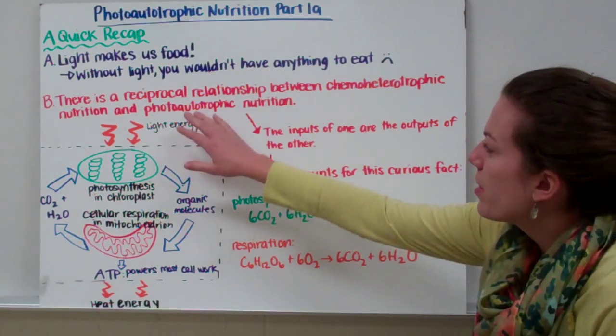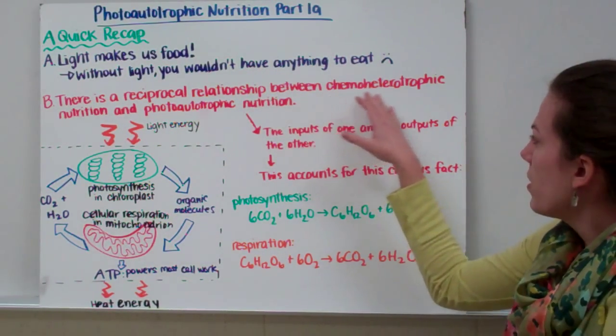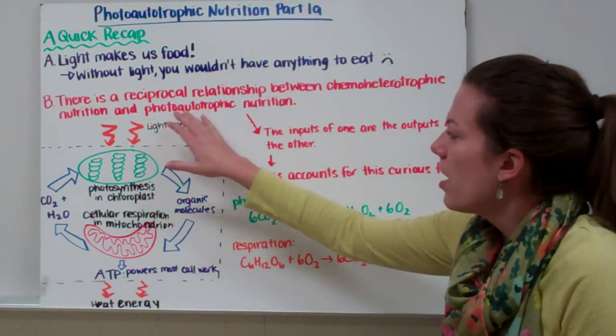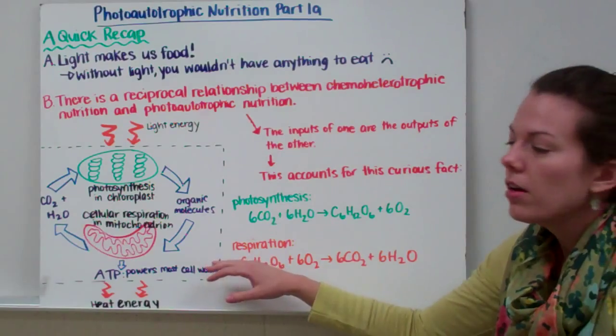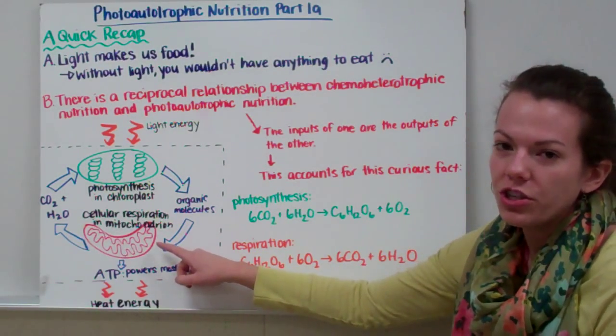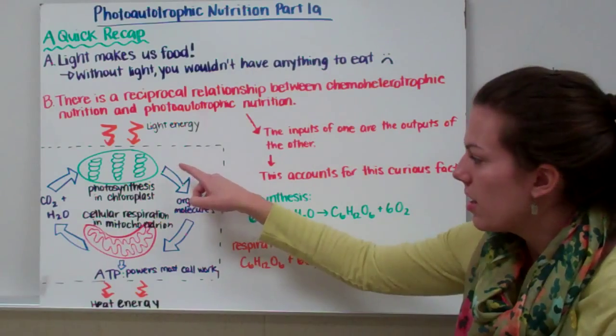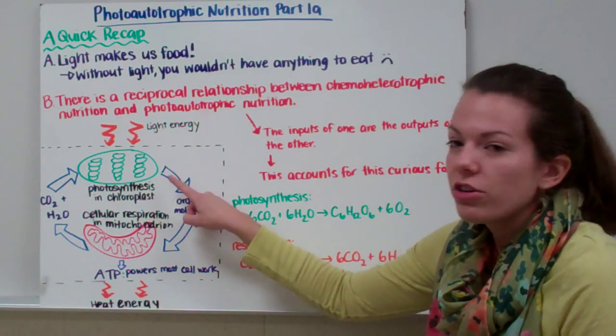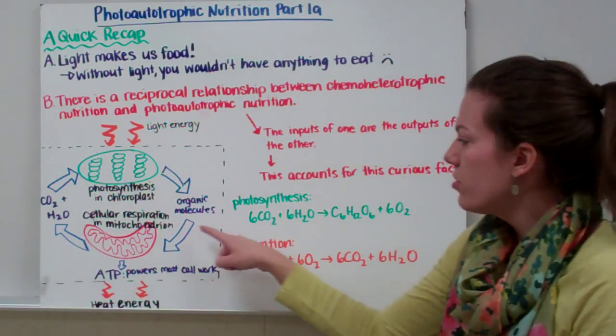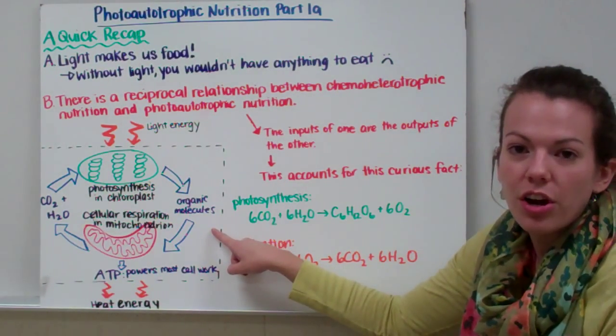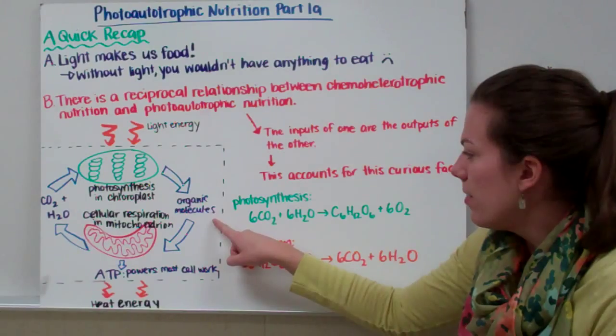There is a reciprocal relationship between chemoheterotrophic nutrition and photoautotrophic nutrition. You can see in our diagram here, we have our chloroplast and our mitochondria. The chloroplast captures light energy from the sun, and it turns that light energy, in combination with carbon dioxide and water, into organic molecules like sugar or, for example, like glucose.